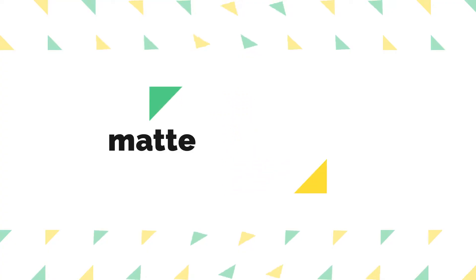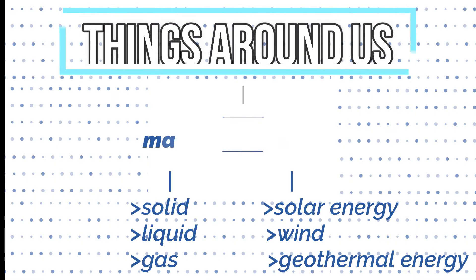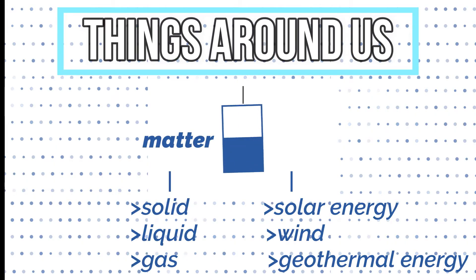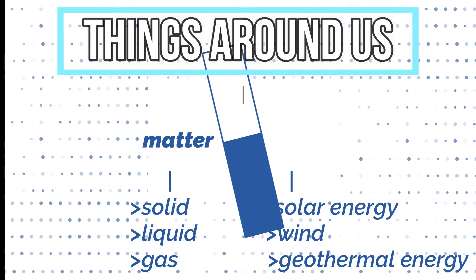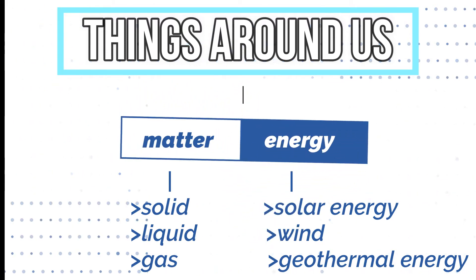At first we are talking about matter and energy. The things around earth are divided into two parts: they are matter and energy.